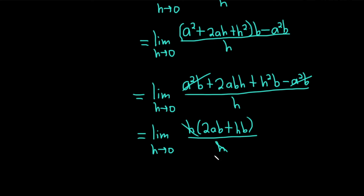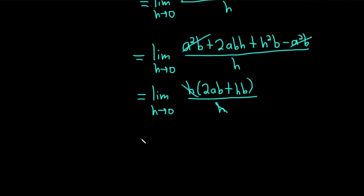This is really nice because they cancel. And so we have now the limit as h approaches 0, parentheses 2ab plus hb.